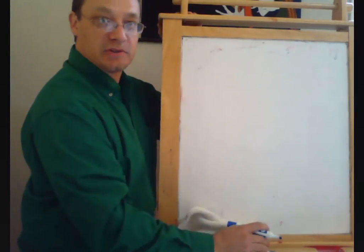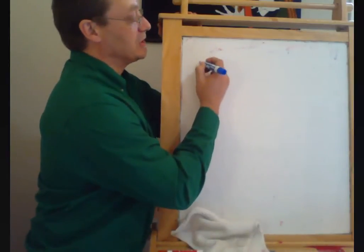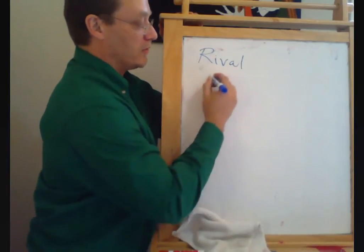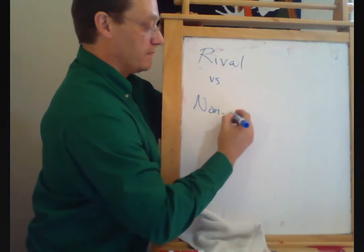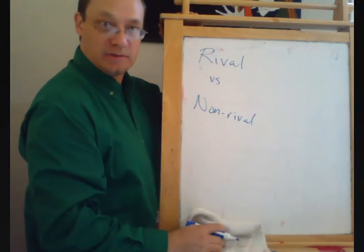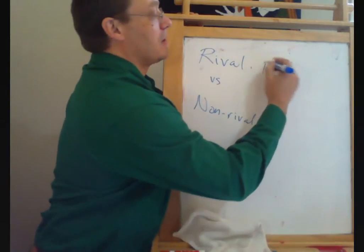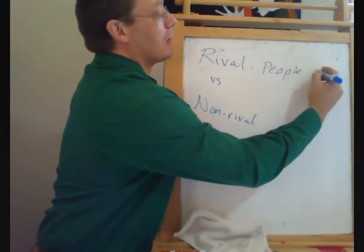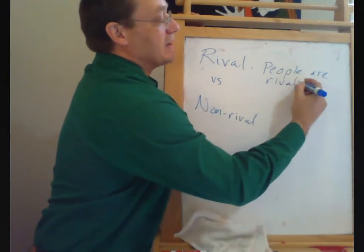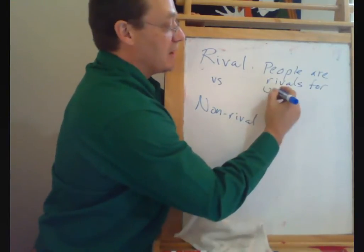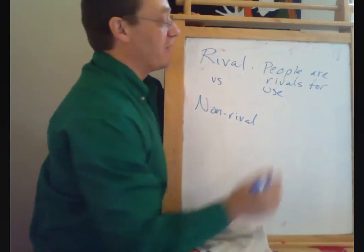Let's first start with a distinction between goods that are what we call rival versus non-rival. Rival goods are goods where people are rivals for the use or consumption of that good. So if I'm eating a ham sandwich, you can't also eat it. And if I'm driving my car north, you can't drive my car south.